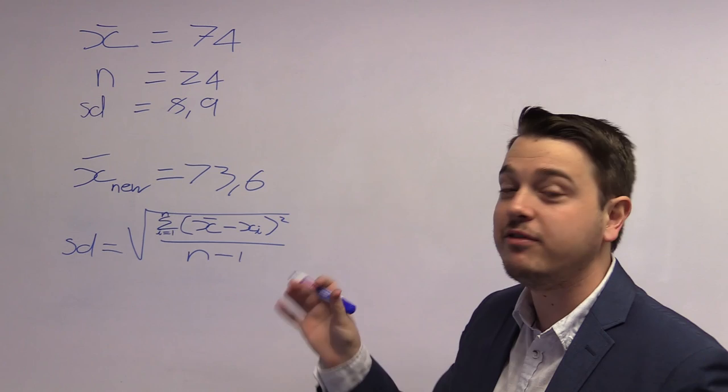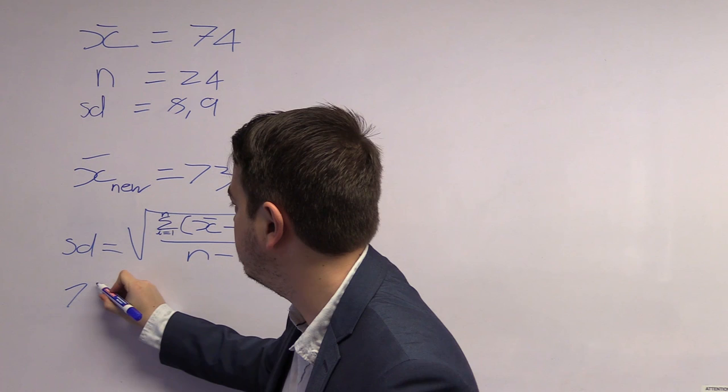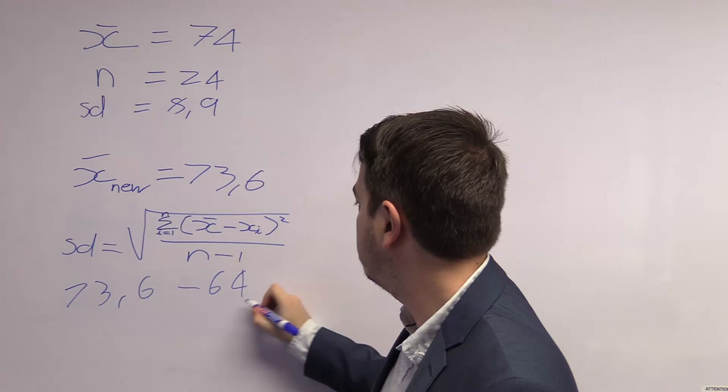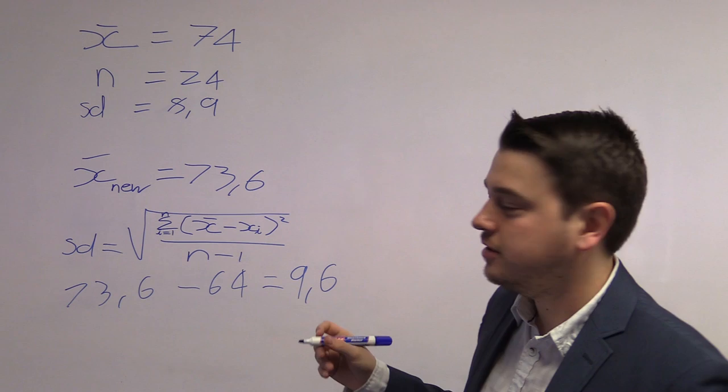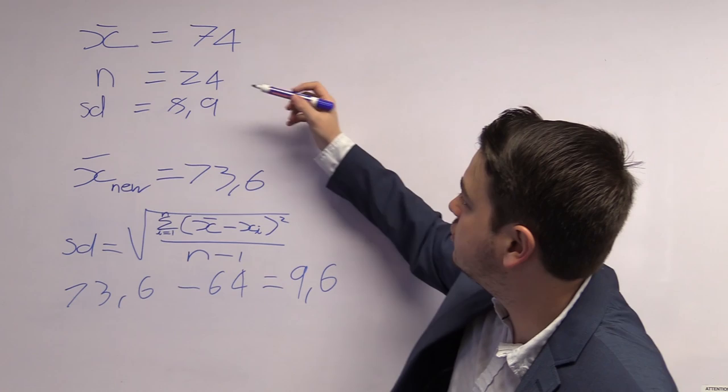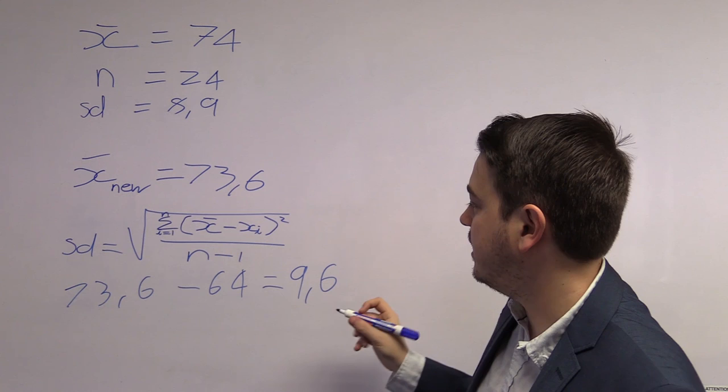In this case, we have 73.6 minus 64 which gives us 9.6. This student got 9.6 marks away from the average, and the standard deviation is 8.9 marks. Therefore, 9.6 divided by 8.9 gives us approximately 1.08, which is larger than 1, so it should increase the standard deviation.